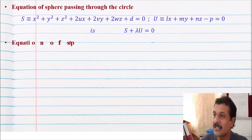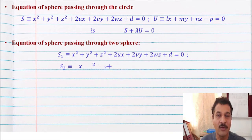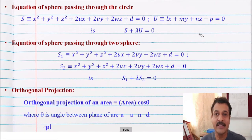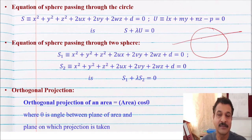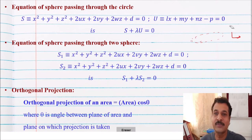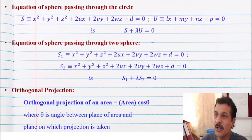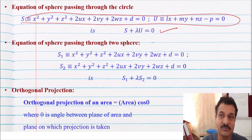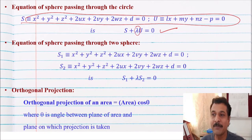Also remember the equation of a sphere passing through a circle. In three dimensions, a circle is a combination of a sphere and a plane — if a sphere is cut by a plane, we get a circle. That is why the equation of a circle is always in the form S and U, where S means sphere and U means plane. So the equation of a sphere passing through this circle is S plus λU equal to zero, where λ is any unknown value. Also, if S1 and S2 are two spheres, then the linear combination gives a new sphere, so the equation of a sphere passing through both spheres is S1 plus λS2 equal to zero.